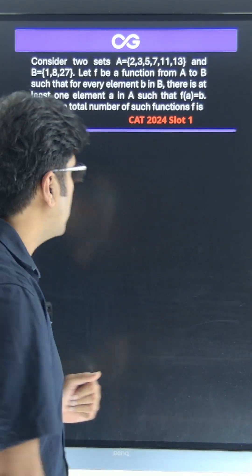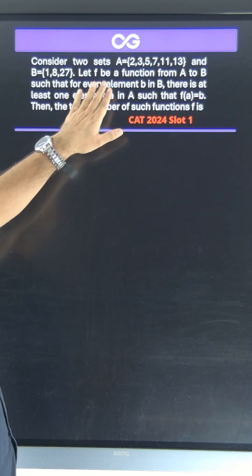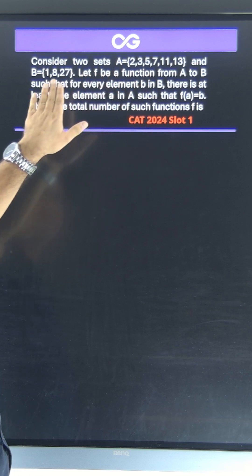Namaste everyone, let's look at this question from CAT 2024 slot 1. There are two sets here - set A has 6 elements and set B has 3 elements.